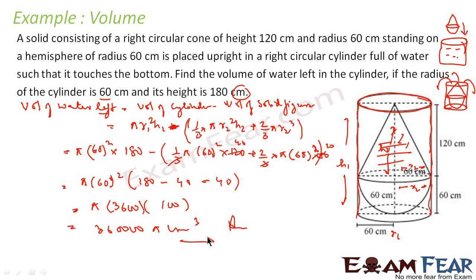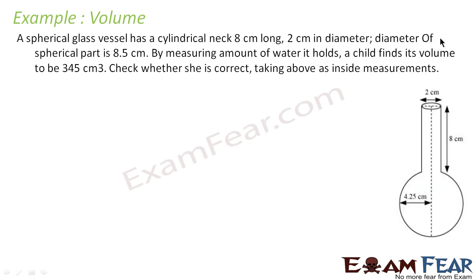It's very simple — just understand that the moment you put this solid figure in the cylinder, the volume of water remaining will be the initial volume of the cylinder minus the volume of the solid.